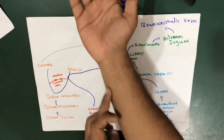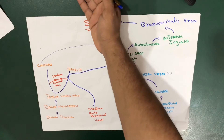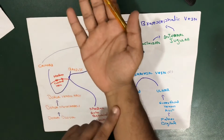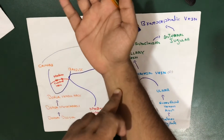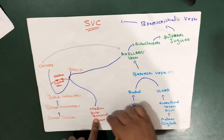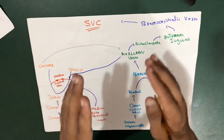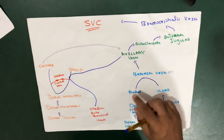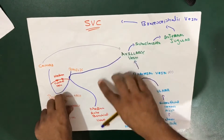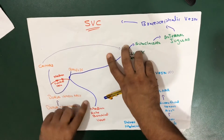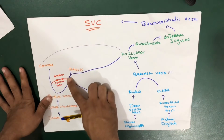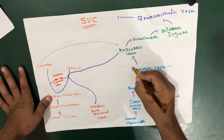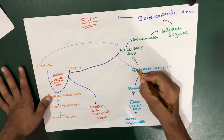The basilic vein moves upward and is joined by the median cubital vein. Another vein, coming from the palmar side of the hand, also joins it — this is called the median antebrachial vein. The median antebrachial vein mostly joins the basilic vein, though sometimes it gives branches to both cephalic and basilic, and sometimes only to the cephalic. So two main structures join with the basilic vein: the median cubital vein and the median antebrachial vein.